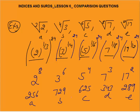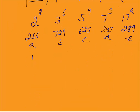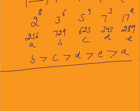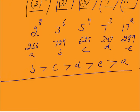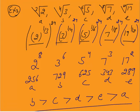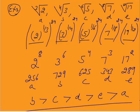So the largest number is B (3^(1/4) = 729), then C (625), then D (343), then E (289), and then A (256). In this way you can arrange surds in descending or ascending order. If this question comes in an exam, you can solve it in less than a minute.